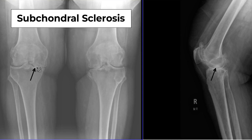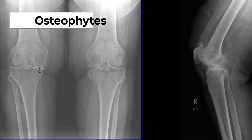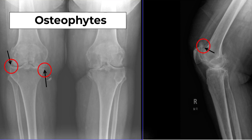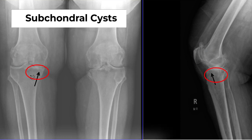The next thing we look for is subchondral sclerosis, which you can see here. This is the dense white bone that forms when you unfortunately develop bone-on-bone arthritis. The next thing we look for are osteophytes, also known as bone spurs. You can see these on the x-ray and they look like small spikes of bone on the inner and outer surface of the knee joint.